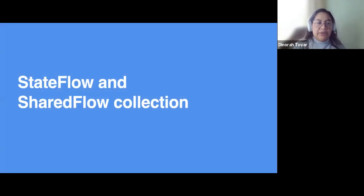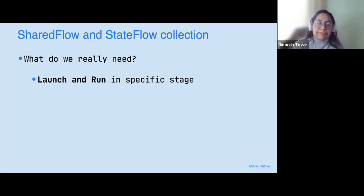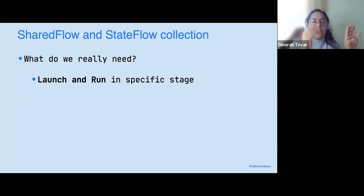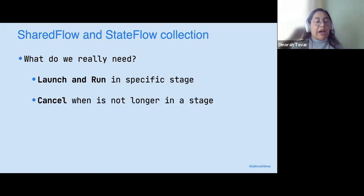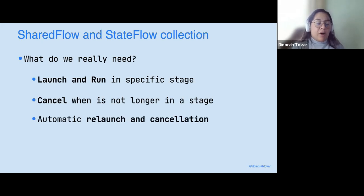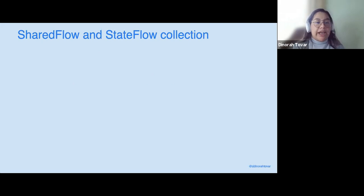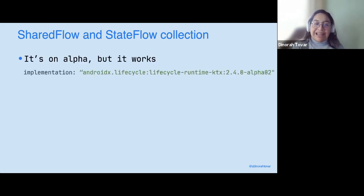There is a brand new way that gives you the chance to safely collect your StateFlows and SharedFlows with all the good things flows has. What we need is to make sure that the launching and running of these collections happen at a specific stage — just right out of the box. We need custom cancellation when it's no longer in that stage, and obviously an automatic launch and cancellation. It's an alpha — the brand new lifecycle-runtime-ktx library, on alpha version 0.2 right now, but it works. I have a full production application using it right now.